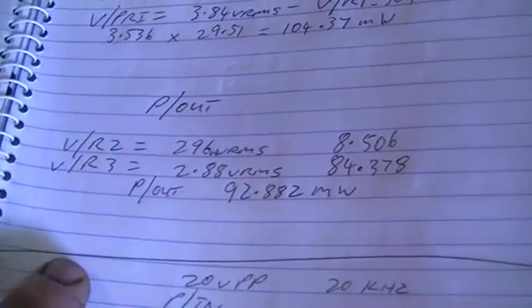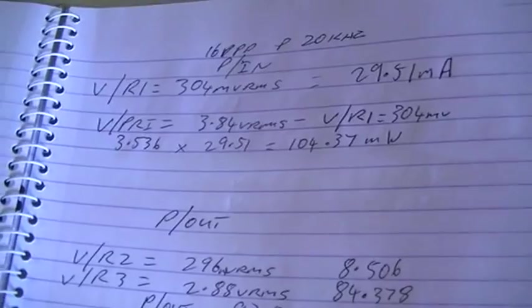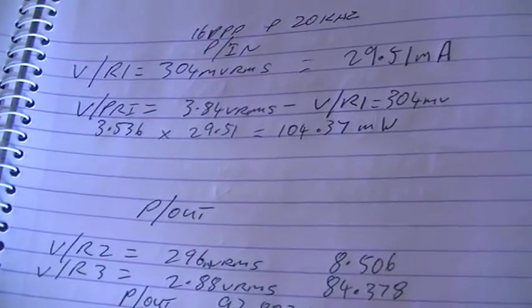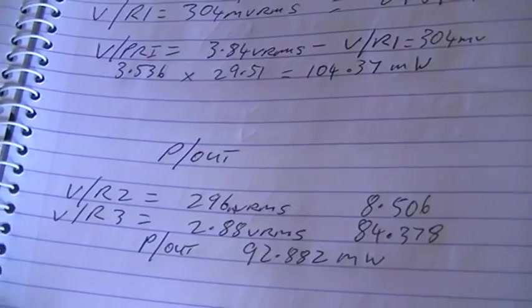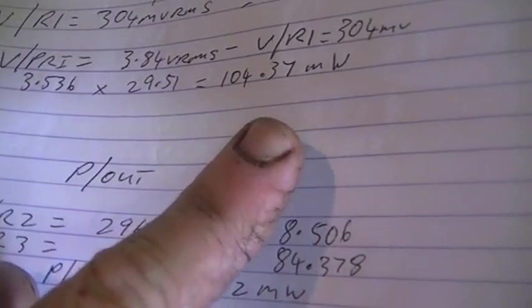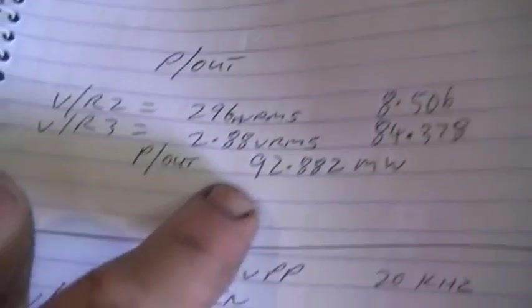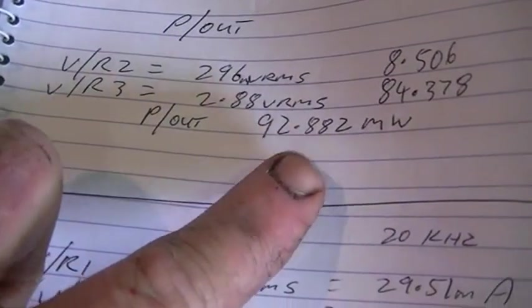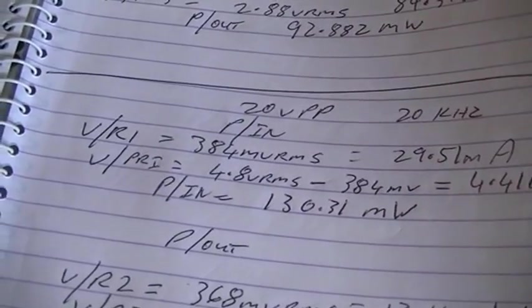This one here, 16 volts peak to peak at 20 kilohertz. So we had 104.37 milliwatts of input power and only 92.882 milliwatts of output power. So once again, not very efficient there.